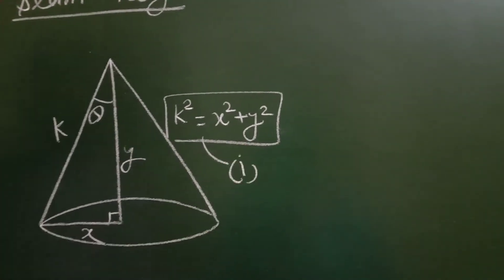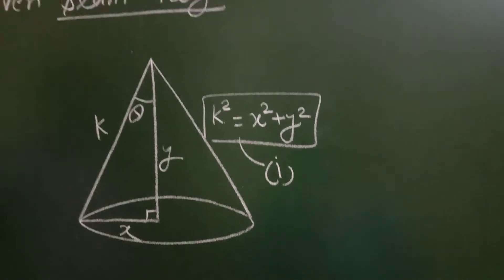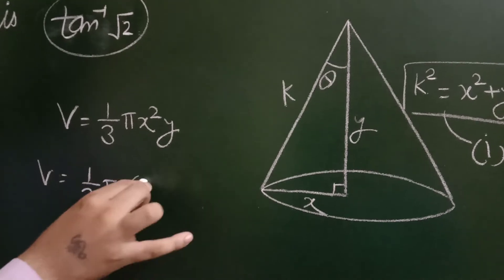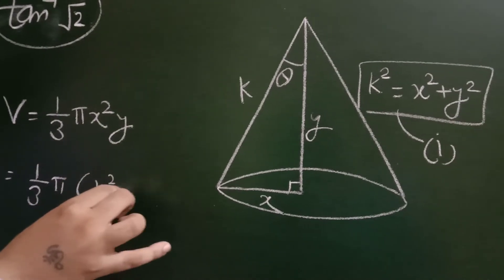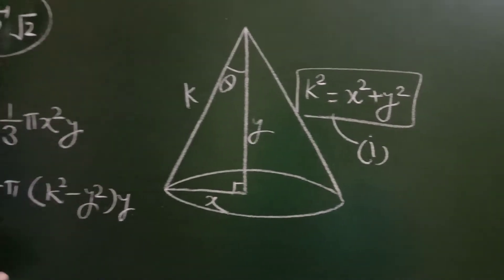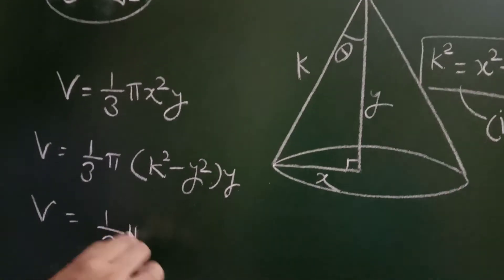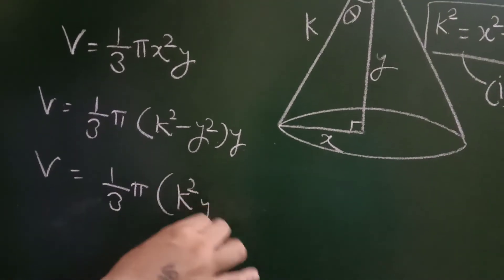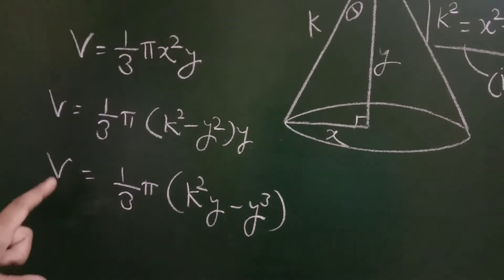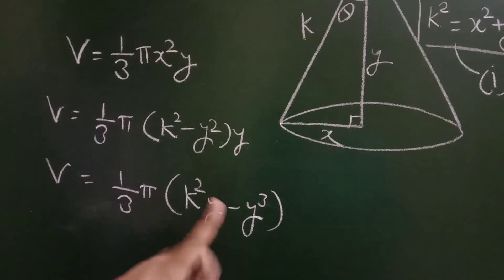So if I substitute x², then I will have volume V = (1/3)π(k² - y²)y. So volume becomes V = (1/3)π(k²y - y³). Right? Now volume is the function of a single variable y. So we can differentiate it.